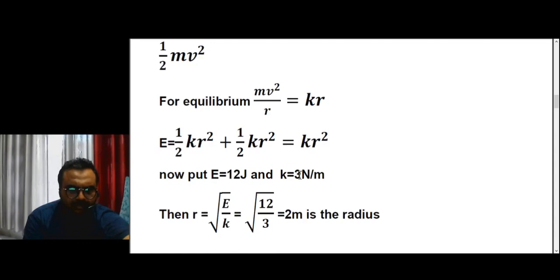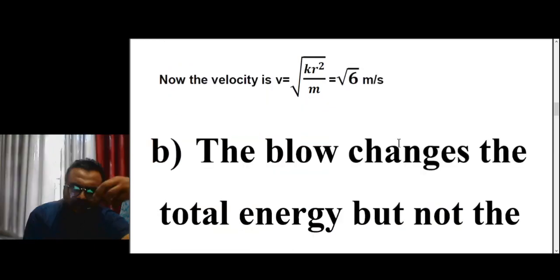It is a simple problem — use the formula, substitute the values, and get r. Now we can find the velocity as well. From the equilibrium equation, v² = kr²/m, so v equals the square root of kr²/m. Putting in the values gives v = √6 meters per second.